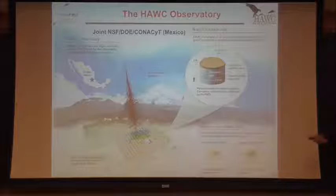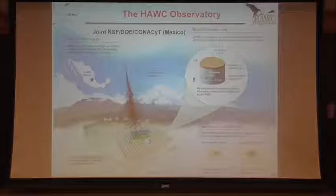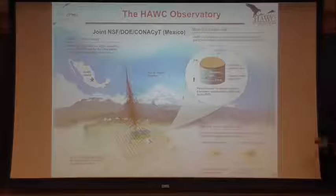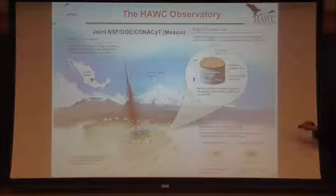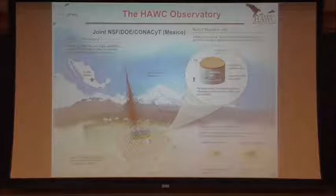You can figure out which tanks saw what and reconstruct where the gamma ray came from and how much energy it has. Something I really wish HAWC had, that Fermi has, is an anti-coincidence detector. With HAWC, we don't have one — I'm not sure how you would even do that — so the gamma-hadron separation is quite difficult.